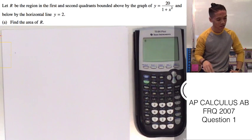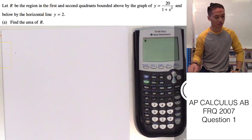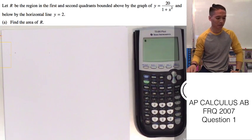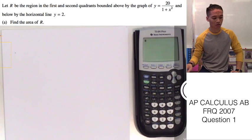The question says, let R be the region in the first and second quadrants bounded above by the graph of y equals 20 over 1 plus x squared and below by the horizontal line y equals 2.